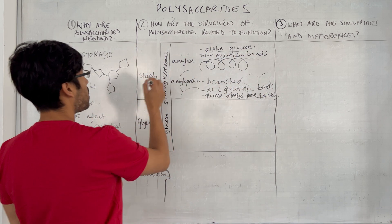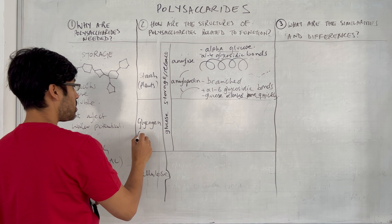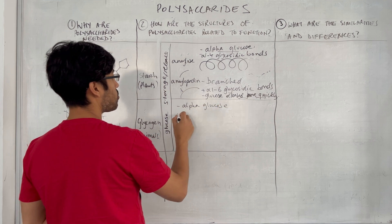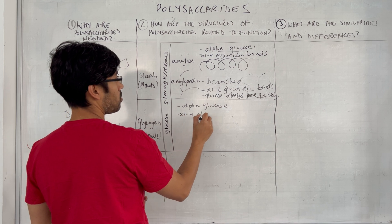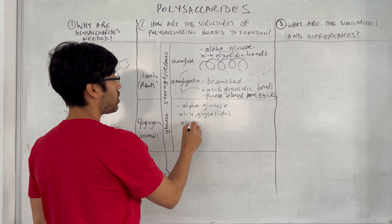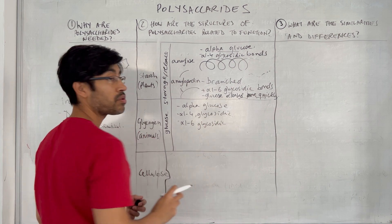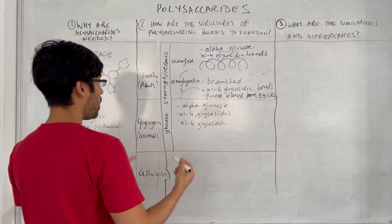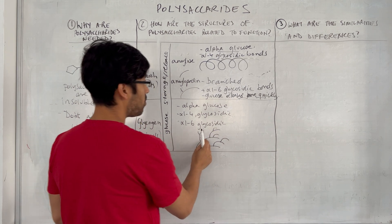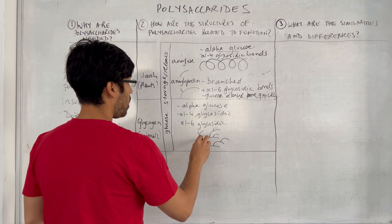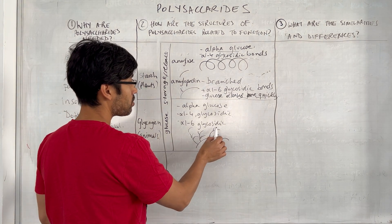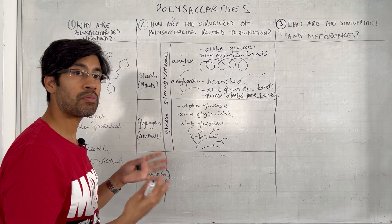Starch is found in plants. Glycogen is in animals. Glycogen is also made of alpha glucose and has alpha one-to-four glycosidic bonds, but it is branched as well, with alpha one-to-six glycosidic bonds. In contrast to amylopectin, glycogen is very highly branched — there are fewer residues between the branch points — meaning glucose can be released much more quickly because there are many more endpoints from which glucose can be released by hydrolysis.